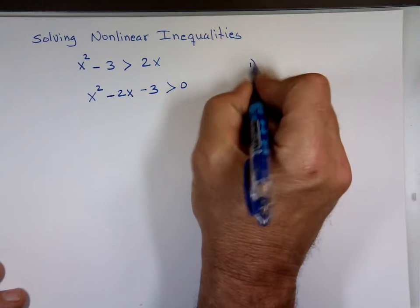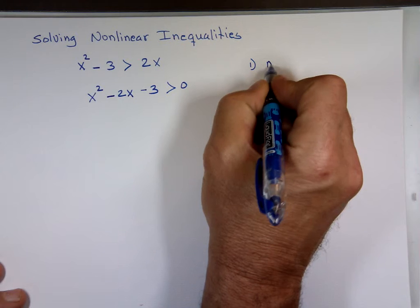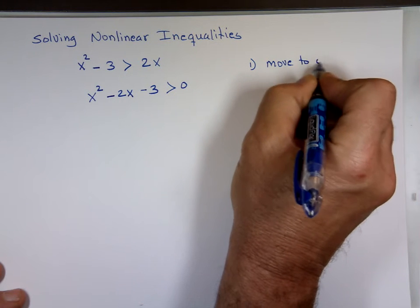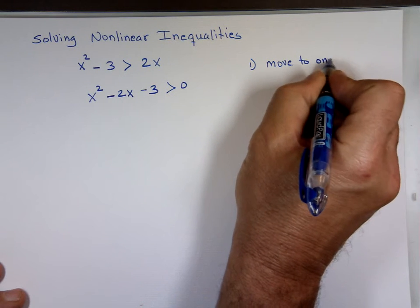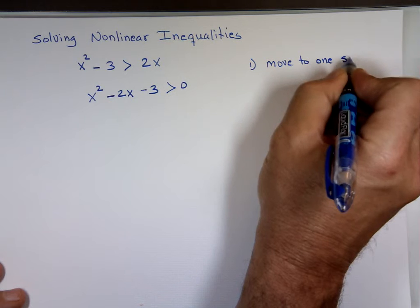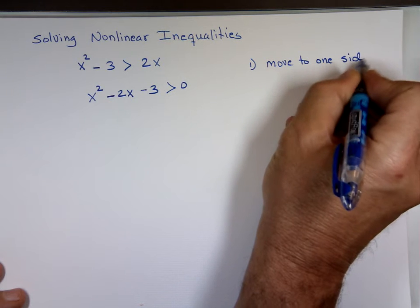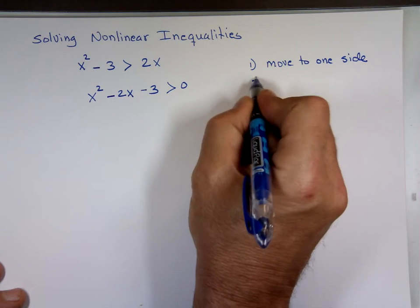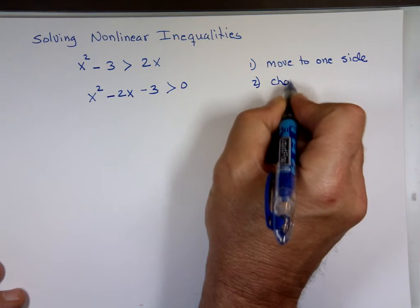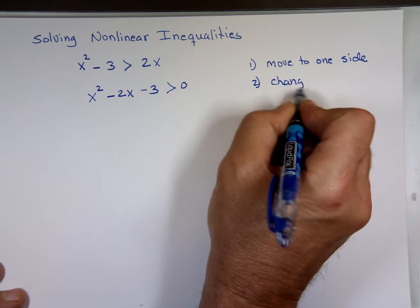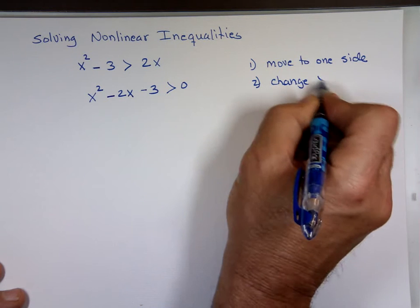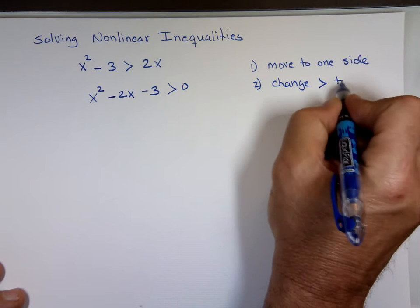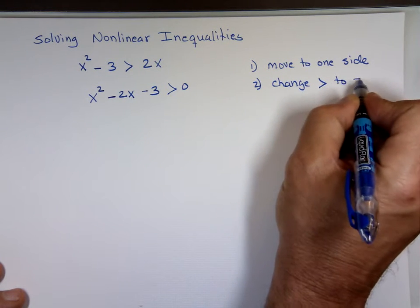Step number one: move everything to one side. If you move it to one side, you end up with x² - 2x - 3 > 0.